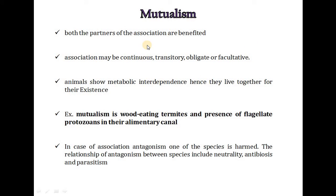The second association is mutualism, where both partners in the association are benefited. This association may be continuous, transitory, obligatory or facultative. Animals show metabolic interdependence and hence live together. For example, mutualism is seen in wood-eating termites and the presence of flagellate protozoans in their alimentary canal. In the association called antagonism, one of the species is harmed. The relationship of antagonism includes neutrality, antibiosis and parasitism.